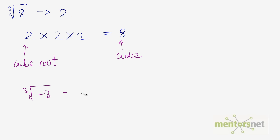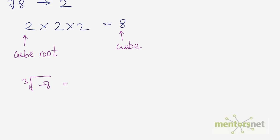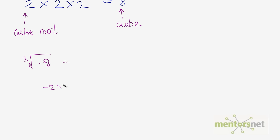Well, it turns out to be minus 2. Minus 2 times minus 2 times minus 2 is minus 8. Minus 2 times minus 2 is 4, and 4 times minus 2 is minus 8. So the cube root of minus 8 is minus 2.